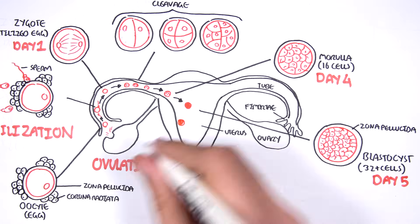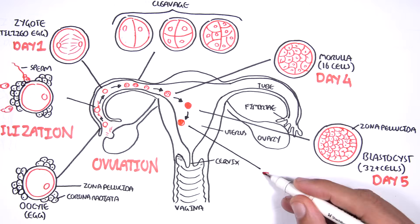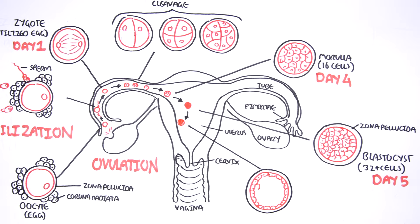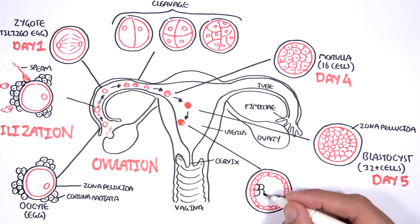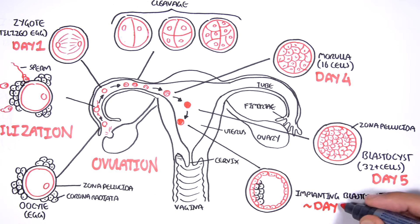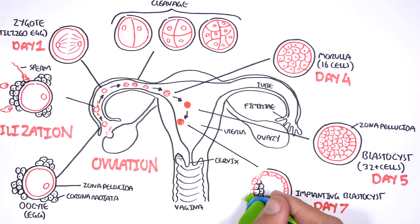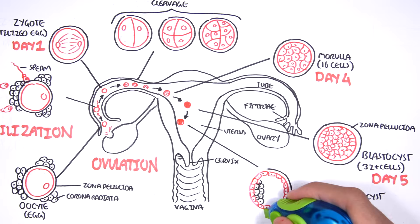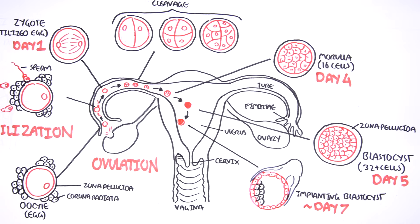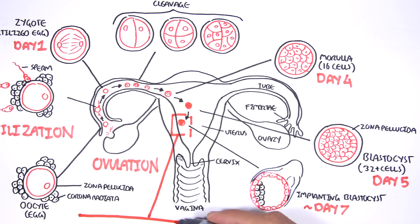The blastocyst will now implant into the growing uterine wall. The blastocyst I am drawing now is a cross-sectional view — we are cutting it in half and looking inside. This blastocyst implants at about day seven. Before implanting, the blastocyst will shed the zona pellucida, which was the membrane surrounding the oocyte initially.